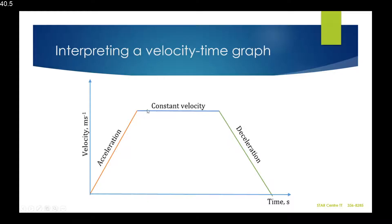Where we have a flat line, it means the object is traveling at constant velocity. So if it's traveling at 80 kilometers per hour, it remains at 80 kilometers per hour throughout that stage — it's not increasing nor decreasing speed.